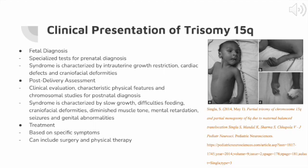Treatment for trisomy 15 is based on specific symptoms and therefore differs for each patient. Early intervention is best to better allow the child to flourish. Treatment can include surgery to repair physical malformations, heart defects, and craniofacial abnormalities. Physical therapy is available for patients with joint and muscle abnormalities to improve movement and coordination. Patients are also regularly monitored for early detection and treatment of infections, such as respiratory infections, which are quite common.